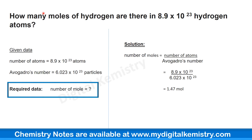The next question is: how many moles of hydrogen are there in 8.9 × 10²³ hydrogen atoms? In this question, the number of atoms of hydrogen, which is 8.9 × 10²³ atoms, is already given, and we have to find out the number of moles of hydrogen. The formula we will use is: number of moles equals number of atoms divided by Avogadro's number.